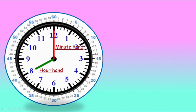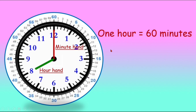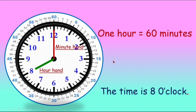So if one full round is completed by the minute hand, that is one hour. We say one hour is equal to 60 minutes, and the time on my clock here is 8 o'clock.